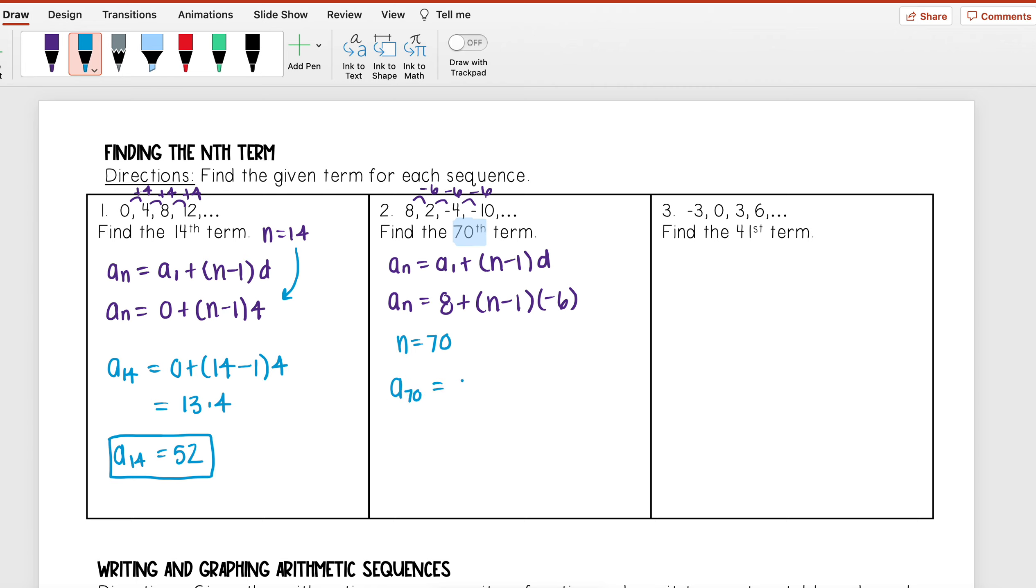This is equal to 8 plus (70 - 1) times negative 6. And then now I need to simplify this out, so I have 8 plus 70 minus 1, I get 69 times negative 6.